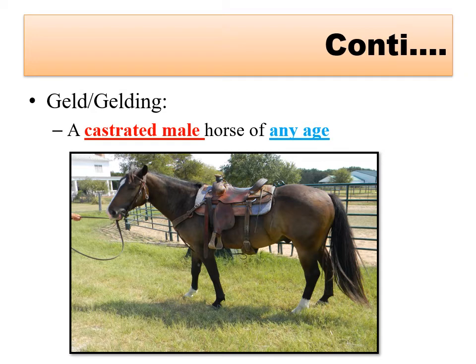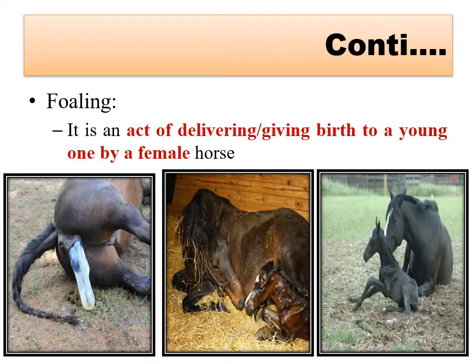A gelding, same as the bullock in cattle and buffalo, is the castrated male horse of any age. Foaling is the act of giving birth to a young one by a female horse.